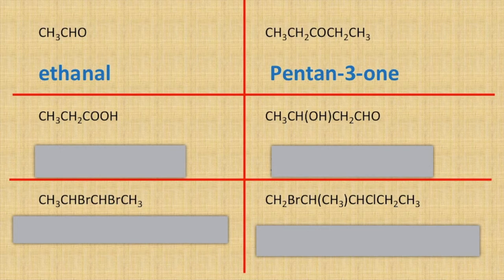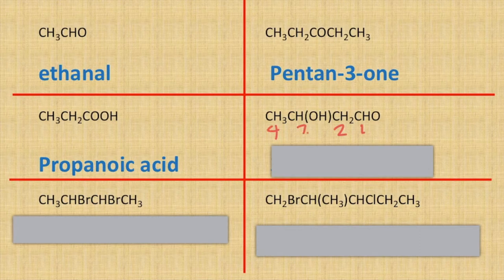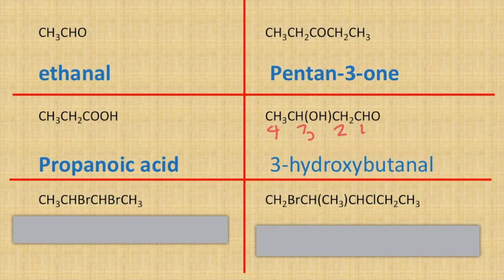This one is slightly more complicated — we've got both an aldehyde group and an alcohol group. The aldehyde takes precedence so that's carbon number one, two, three, four. So we've got four carbons making it butanal, but on carbon number three I've got a hydroxy group, so it's going to be 3-hydroxybutanal.